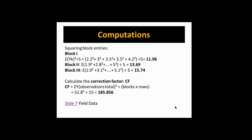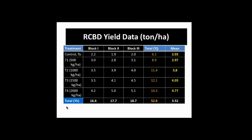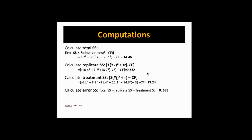We will use the correction factor in the next computations. First, we find the Total Sum of Squares, equal to the sum of each squared observation minus the correction factor. Each observation is squared — 2.2 squared plus 3.0 squared, and so on — and the answer minus the correction factor gives 10.426.